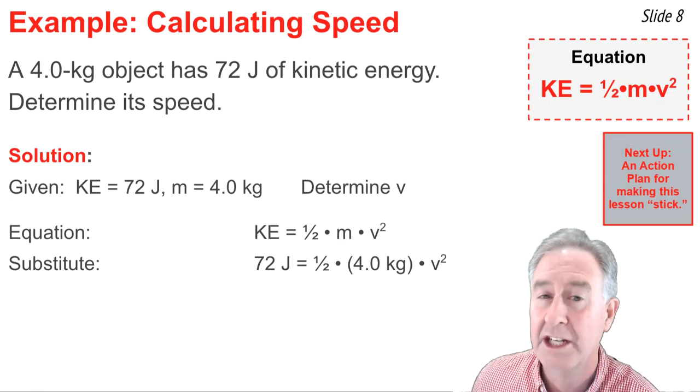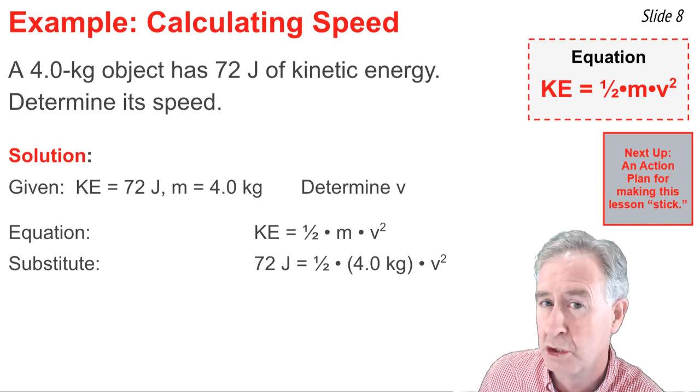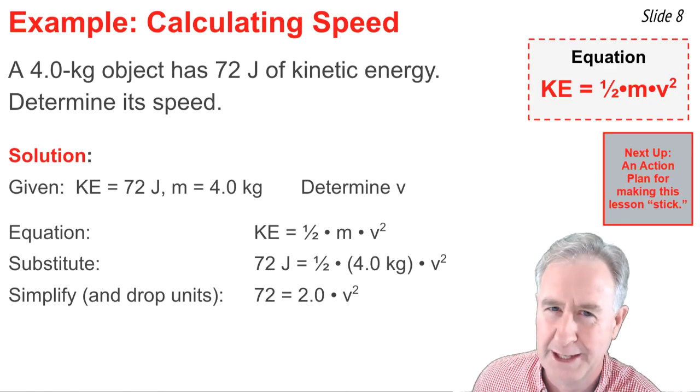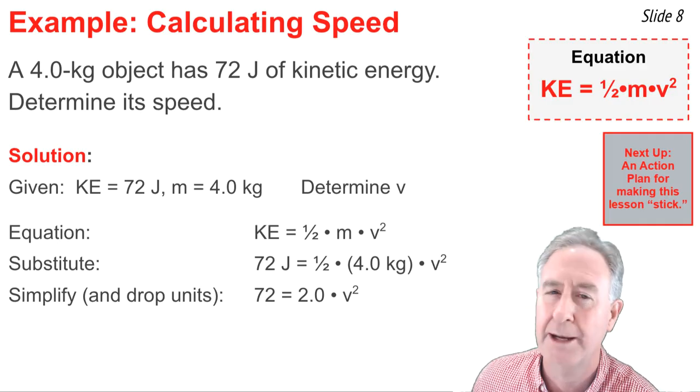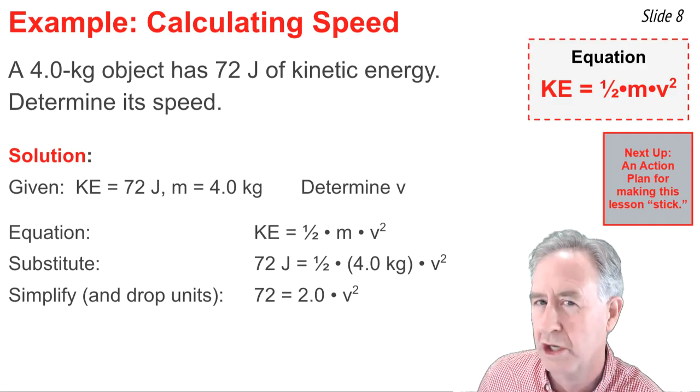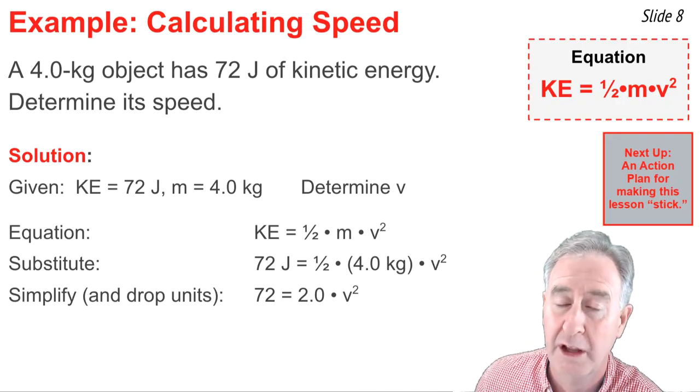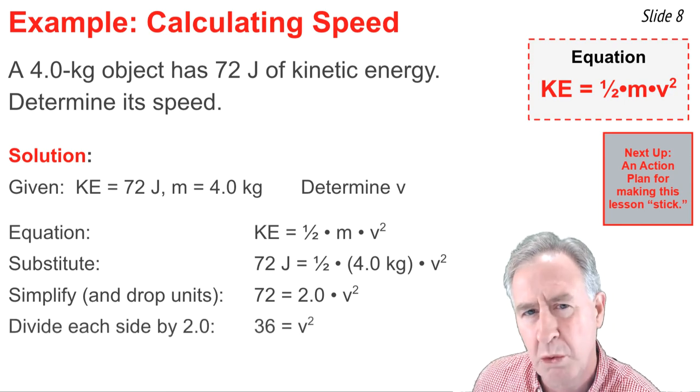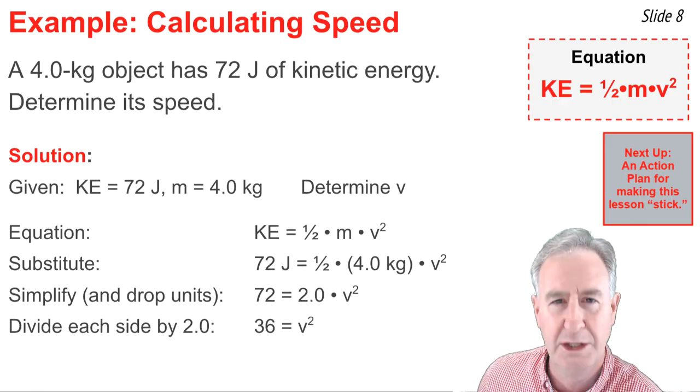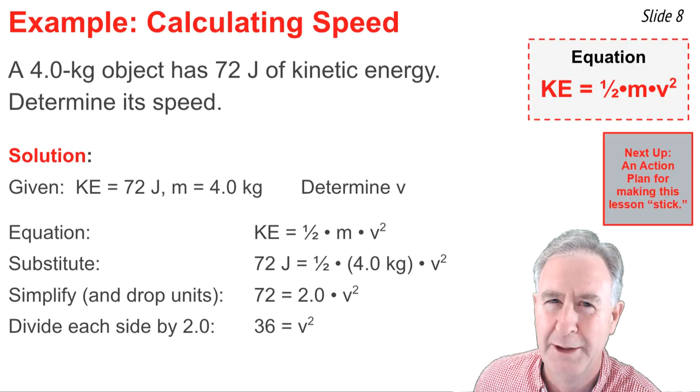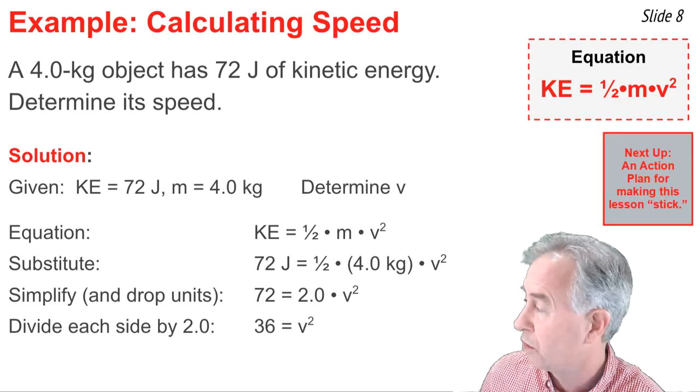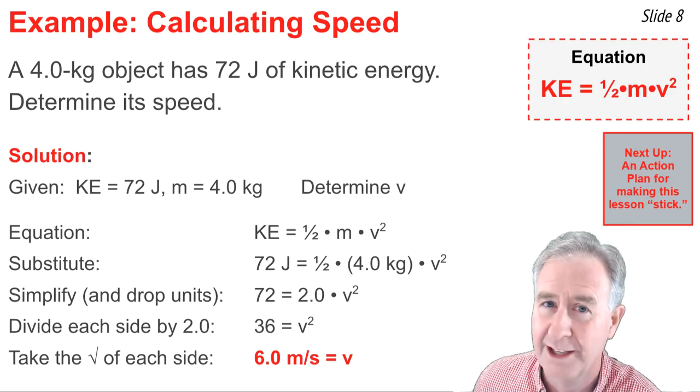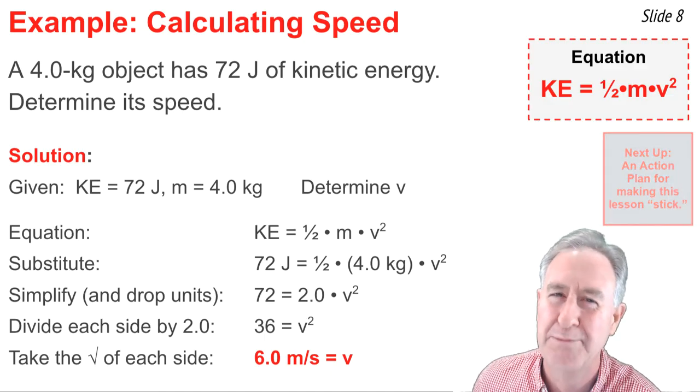Now I write down the kinetic energy formula and then I substitute known values into the formula. I end up with 72 joules equals one-half times 4.0 kilograms multiplied by v squared. And I'm trying to solve for v. So in the next step, I'm going to simplify the right side, and I'm also going to get rid of those distracting units. So one-half times 4.0 is 2.0. So I write 72 joules equals 2.0 times v squared. I'm trying to solve for v, so I need to isolate the v squared by itself. So in the next step, I divide both sides of the equation by 2.0. I end up with 36 equals v squared. I'm one step from an answer now. To solve for v, you need to take the square root of both sides of this equation. And when you do, the left side becomes 6.0 and the right side becomes v. So there you have it. The speed of this object is 6.0 meters per second.